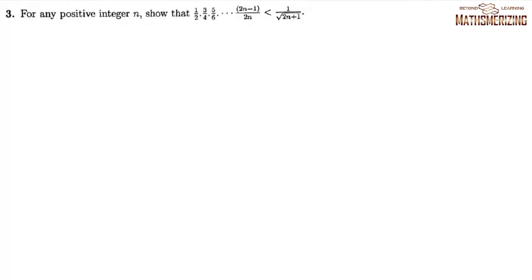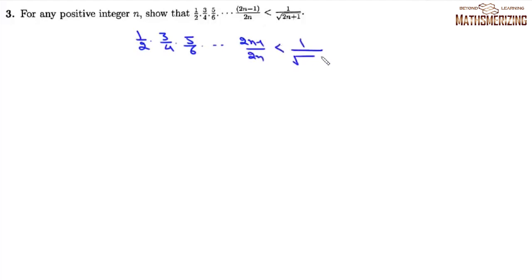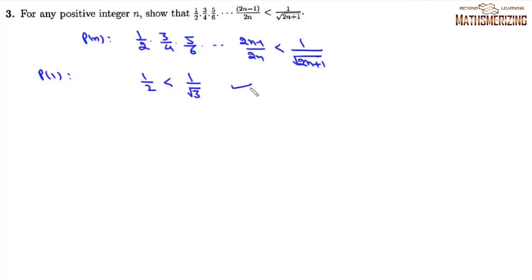Question 3: For any positive integer n, show that (1/2)(3/4)(5/6)···((2n−1)/(2n)) < 1/√(2n+1). Let this statement be P(n). We prove by mathematical induction. For n = 1, the left side is 1/2 and the right side is 1/√3, which is true. So P(1) is true.